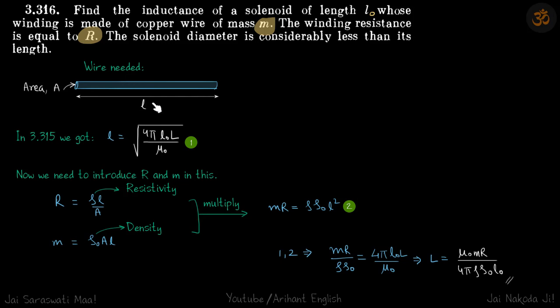Let's say the wire needed is of length L and its cross sectional area is A. In the previous question we saw that this length of the wire is given as root of 4πL0L/μ0, where L0 is the solenoid length.